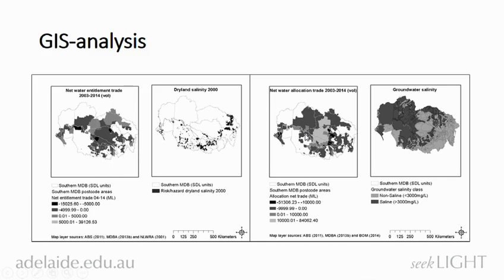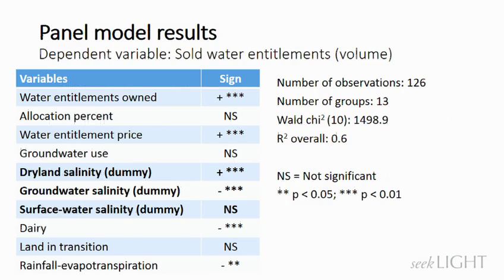If we look at the right maps, we can compare net water allocation trade and groundwater salinity. Darker regions indicate that those regions' water allocations were mainly bought out of the region. Comparing this with higher groundwater salinities or non-saline areas, we can see some spatial relationships. To investigate this in more detail and put it in perspective with other potential determinants, we ran the random effects panel regression model.